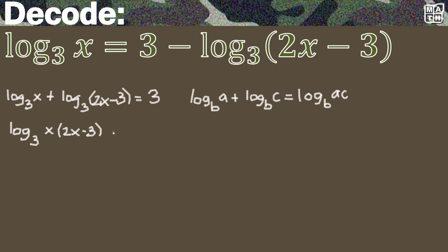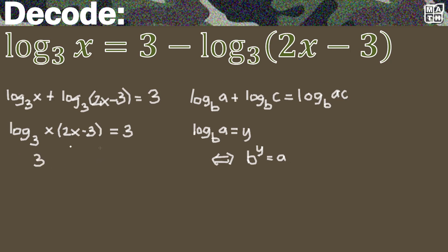So we are going to multiply x and 2x minus 3, and this is still equal to 3. Before we multiply these coefficients, we can apply the transformation of a logarithm: if logarithm of A to the base B equals y, we can transform this into an exponential expression where B is the base, y is the exponent, and this equals A. Here, our base is 3, the entire logarithm equals 3 as the exponent, and this equals the product of x and 2x minus 3.